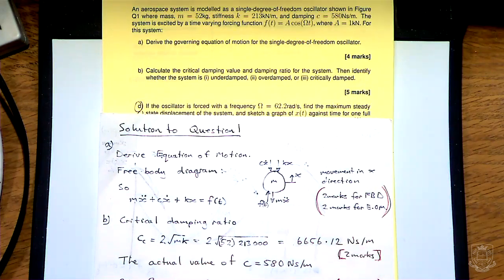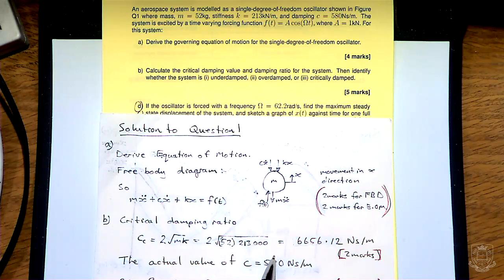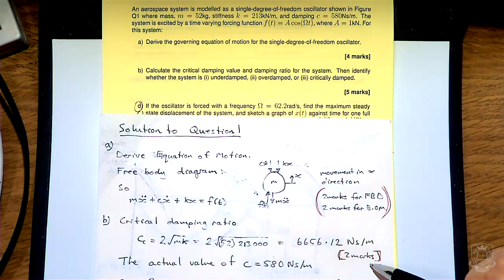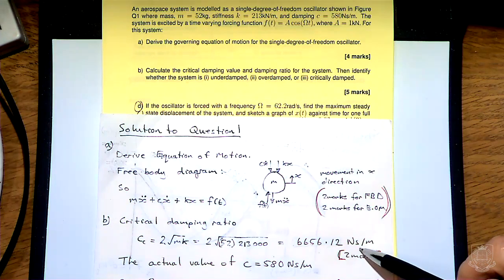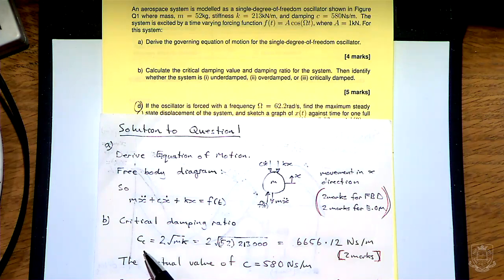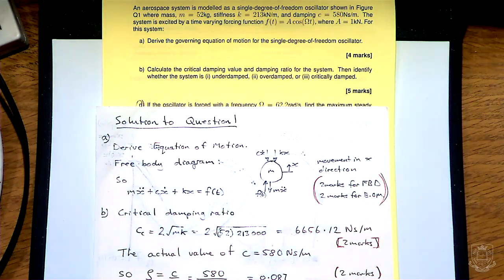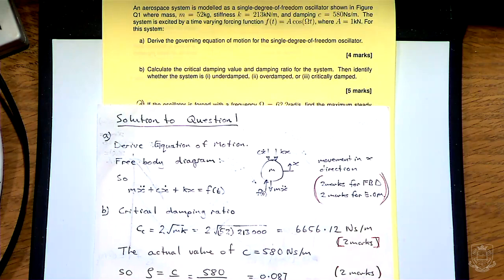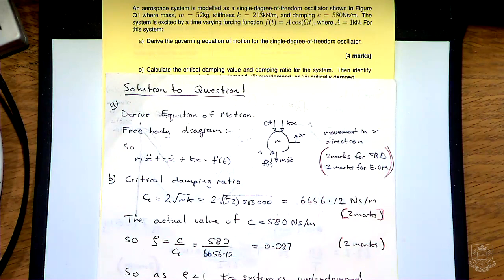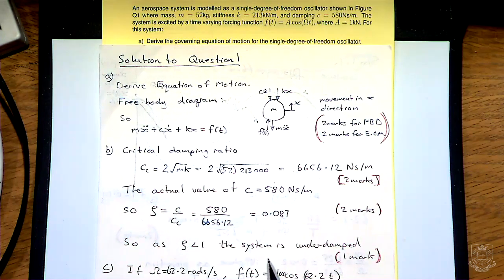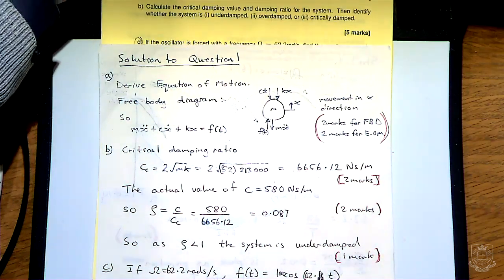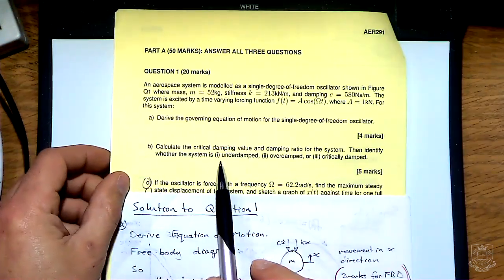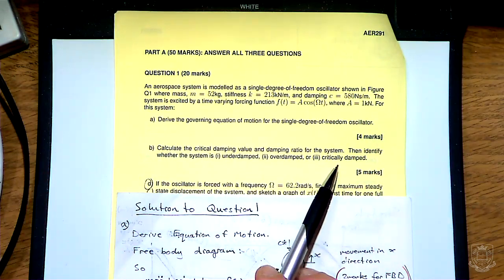The critical damping ratio is given by a formula and we can plug in the numbers to get a value — the marking scheme is looking for a value and units. This gives us C-critical. We're given C, the actual value, in the question, so to get the damping ratio we divide one by the other. The key thing to notice is that because zeta is less than 1, the system is underdamped — and you get a mark for stating that. Part B explicitly asks you to determine whether the system is underdamped, overdamped, or critically damped.